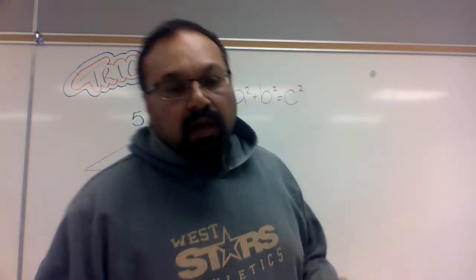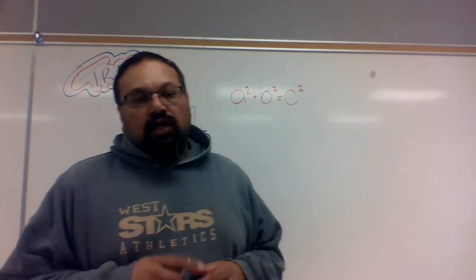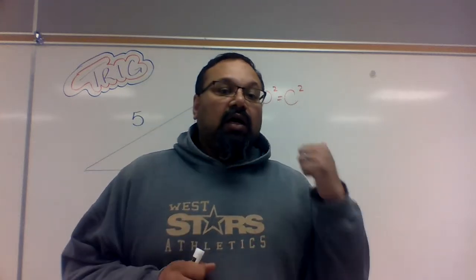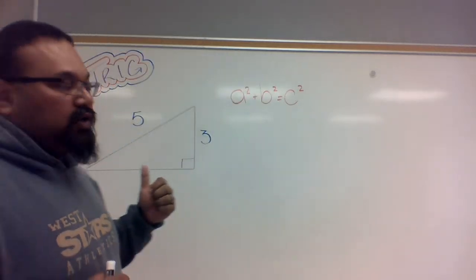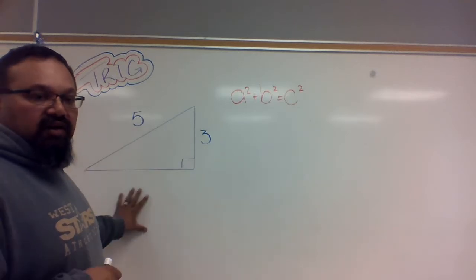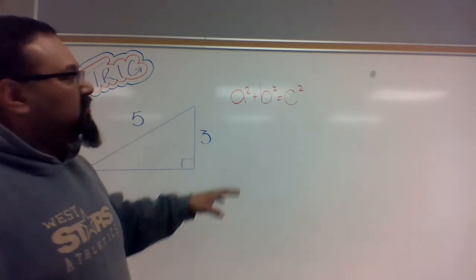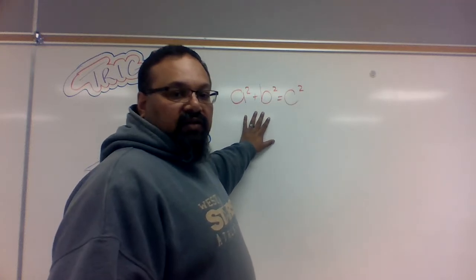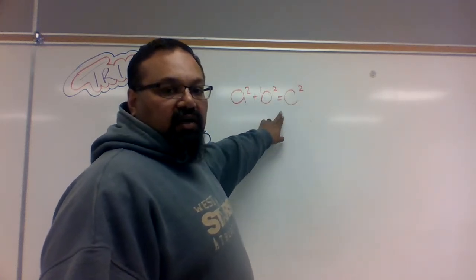All right, we're back. A couple more examples and trials of working backwards when you're given the hypotenuse and one side and you're trying to find the unknown side. As always, the initial formula you're going to start with is A squared plus B squared equals C squared.